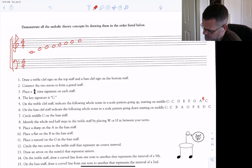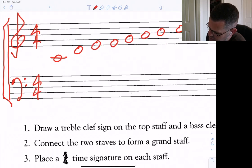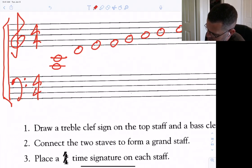They forgot a B in there. That's a typo. On the bass clef staff, indicate the following whole notes in a scale pattern going down, starting on middle C. So I'm going to let that make it easier on me: C, B, A, G, F, E, D, C.